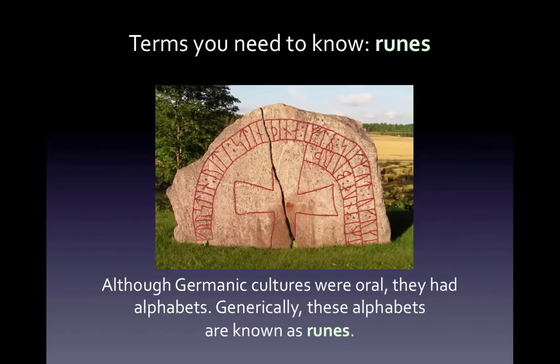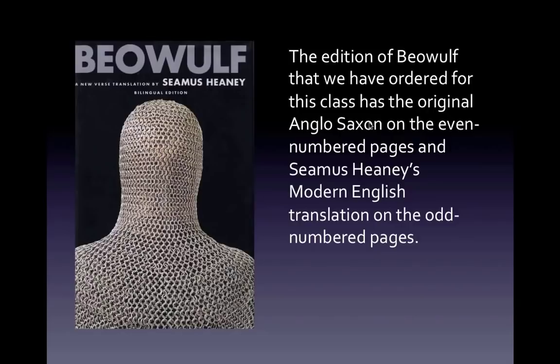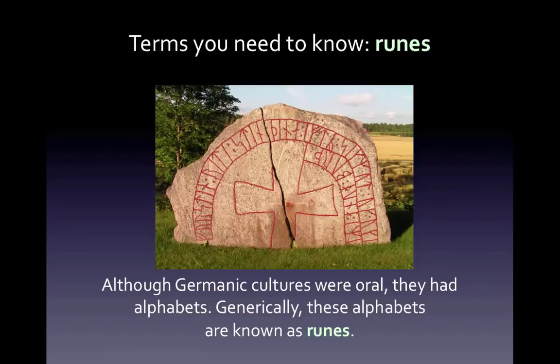You will recall that Anglo-Saxon culture was an oral culture. In fact, all Germanic cultures were oral cultures. But that doesn't mean that they didn't have alphabets — they did, even if they didn't use them very much. The umbrella term for these Germanic alphabets is runes. If you look at the screen, you will notice that the letters in this sample runic alphabet employ a lot of straight lines — perfect if you're carving the words into wood or stone. These were very rudimentary alphabets, but they worked for the Germanic tribes since they didn't need to use them all that much.